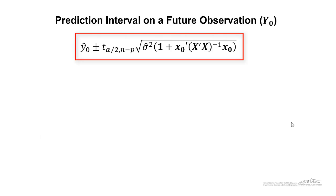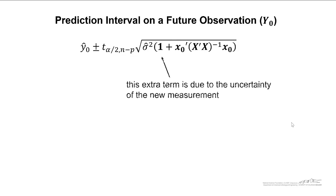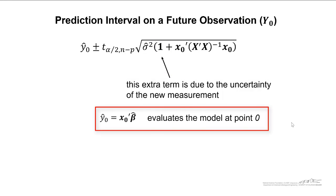We can also put together a prediction interval on a future observation. That future observation is y naught. It's centered about y naught hat. What I'm showing here is a half interval. Just to save some space, it's very similar to the confidence interval on the mean response. The only modification here is we have a 1 inside these parentheses, which is due to the uncertainty of the new measurement. And we can calculate y naught hat as the transpose of x naught multiplied by beta hat. This evaluates the model at point zero.